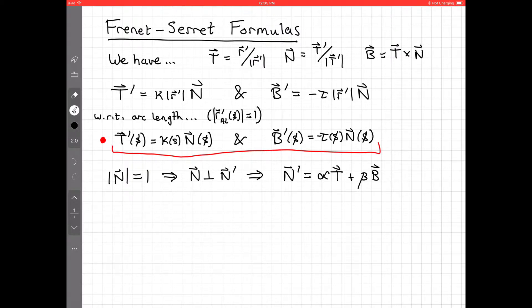So we can decompose it into its tangential and binormal components. Now the question is, what are those things? Well, let's go ahead and take t cross n and differentiate it. So we have the binormal, and it's t cross n.